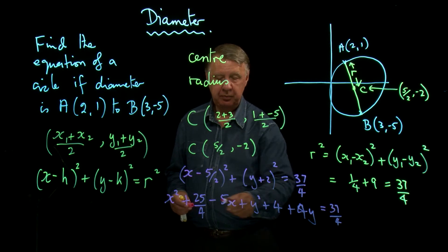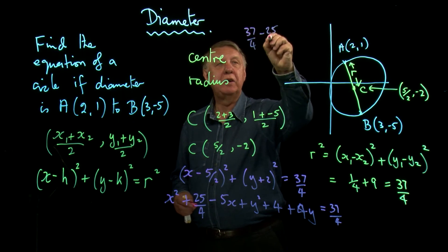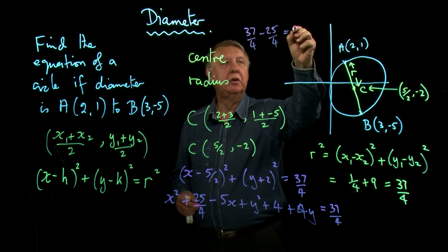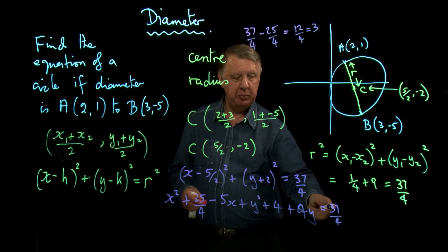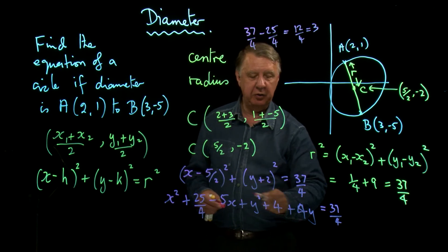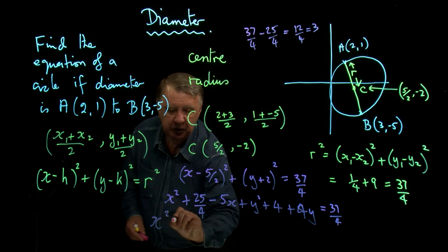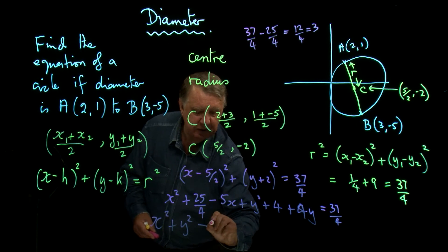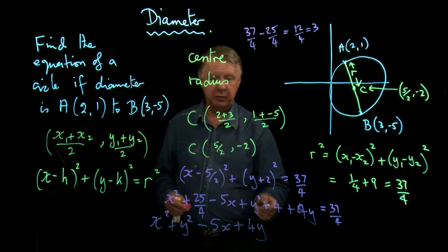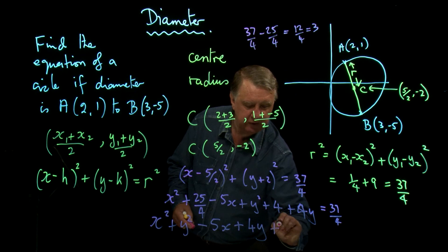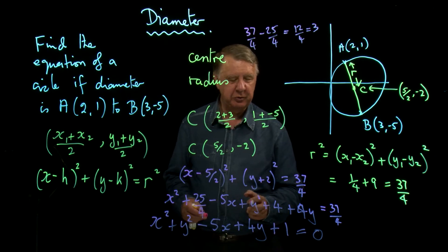37 over 4 take away 25 over 4, let's just do that. 37 over 4 take away 25 over 4 is 12 over 4, which is 3. So that will give me 3 on that side. But if I bring that back here and take it away from 4, that will come to 1. So I think that this simplifies to x squared plus y squared minus 5x plus 4y, and what did I say? I think that came to 1, didn't it? So I hope that's right. Plus 1 equals 0. You can always check that my working is right. You always ought to do that with your teacher when you're listening to them.